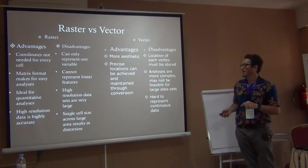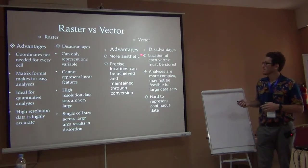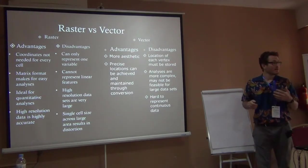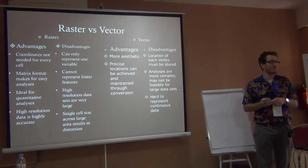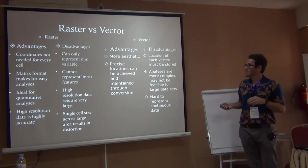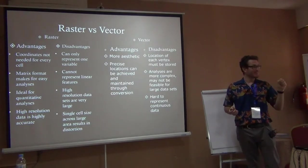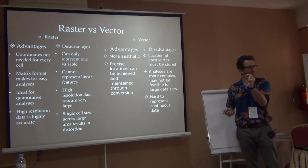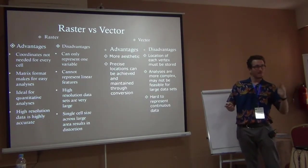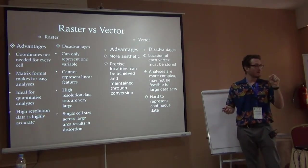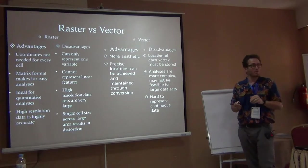High-resolution raster data sets are really large, so your computer has to be able to store them. Vectors are more aesthetic — more visually pleasing — we can see nice curvatures really well. Precise locations can be achieved with each point, whereas with raster we can only go every 30 meters, so we may not get the precise location because we're limited by the cell length. With vectors you can go a millimeter and do another point, getting very precise coordinates.